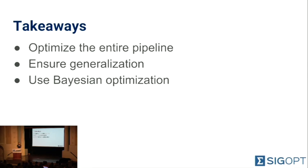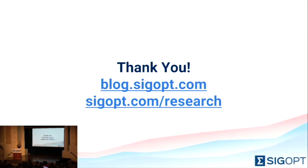In conclusion, some key takeaways from this talk: expand your thinking of optimization from just optimizing your model to optimizing an entire machine learning pipeline. Use a method like K-fold cross-validation to help your model generalize and avoid overfitting. And in most appropriate cases, use Bayesian optimization to optimize the hyperparameters of your machine learning model. Feel free to visit our blog at sigopt.com/research, or visit us at the booth for questions. Thank you so much.